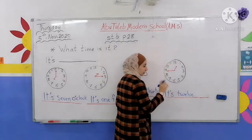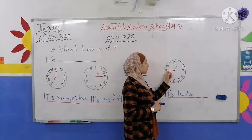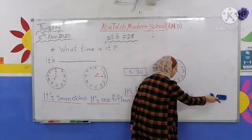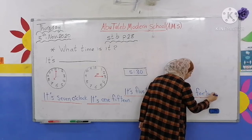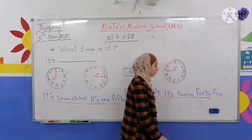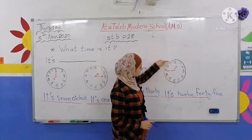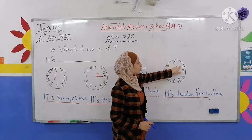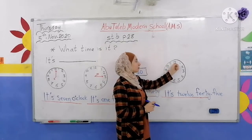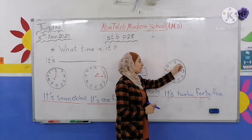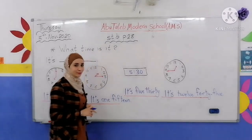Forty five — خمسة وأربعون دقيقة. This means that when the big hand moves another quarter (15 minutes) to reach twelve, it becomes one o'clock exactly. But right now we say: It's twelve forty five — الثانية عشرة وخمسة وأربعون دقيقة. Thank you.